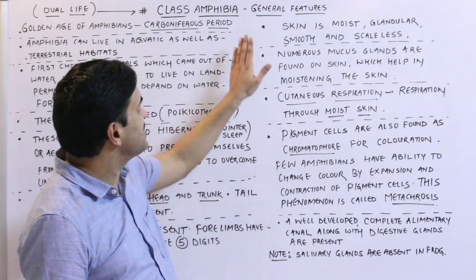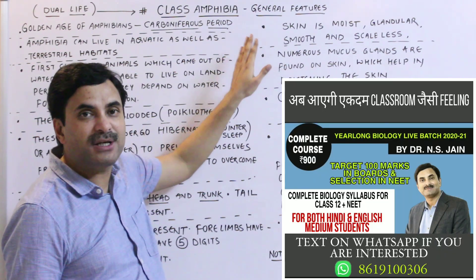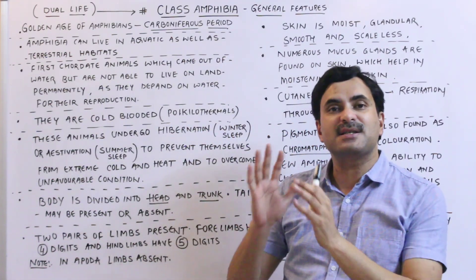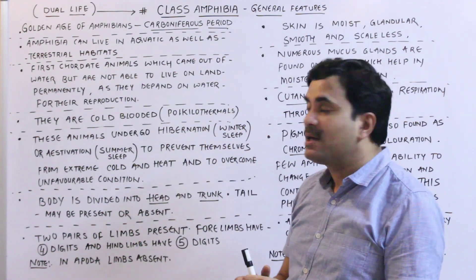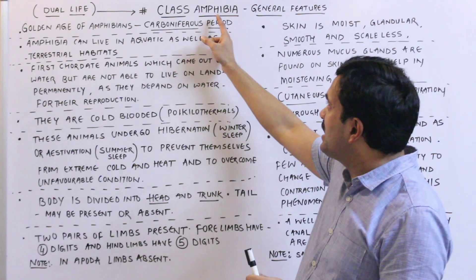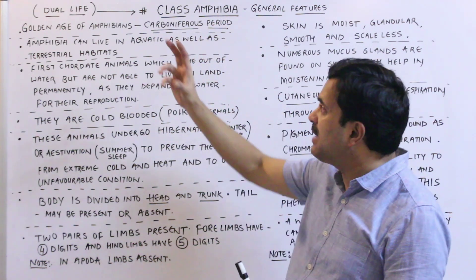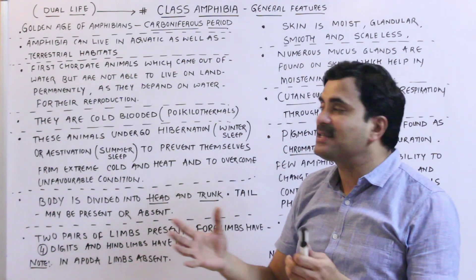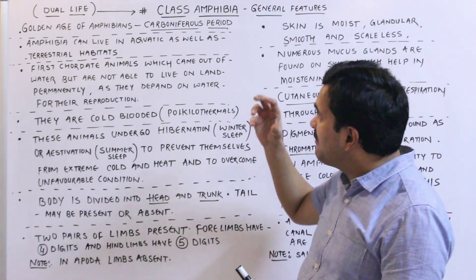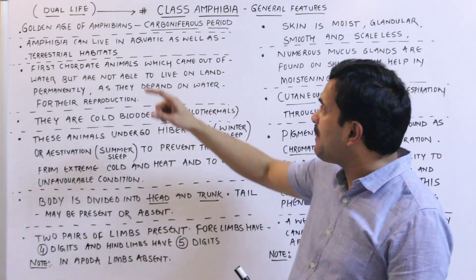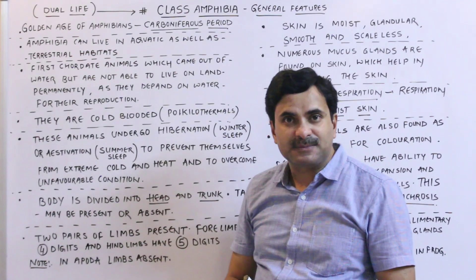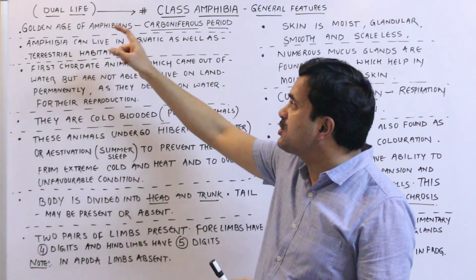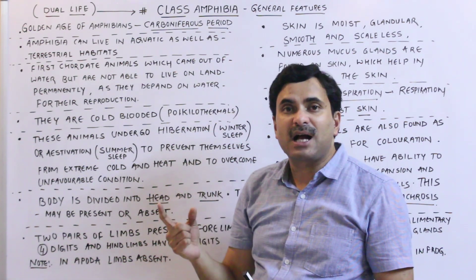Today we will be discussing Class Amphibia — a very important class, but it is the smallest class when we study the chordates. The first question arises: what is the meaning of the word 'Amphibia'? Amphibia means dual life, meaning they can live on land as well as water. The golden age of the amphibians was a period known as the Carboniferous period.